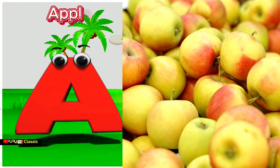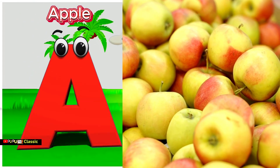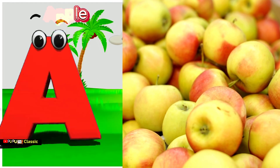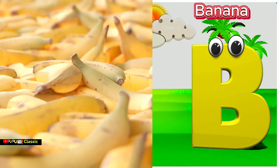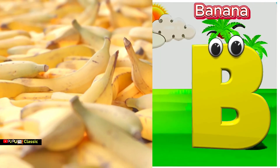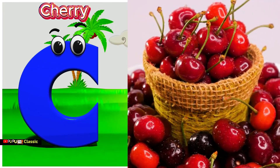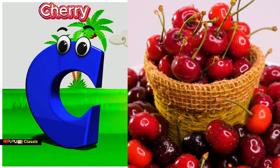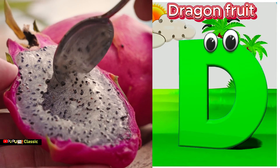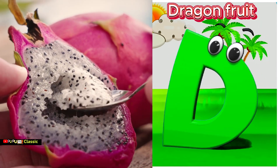A is for apple, a-a-apple. B is for banana, b-b-banana. C is for cherry, c-c-cherry. D is for dragon fruit, d-d-dragon fruit.